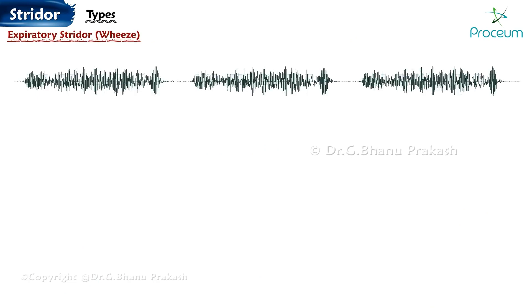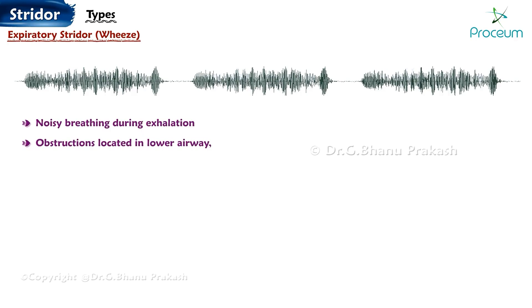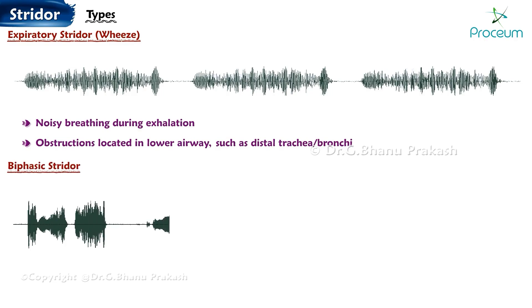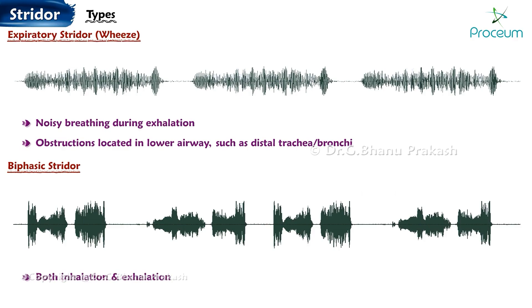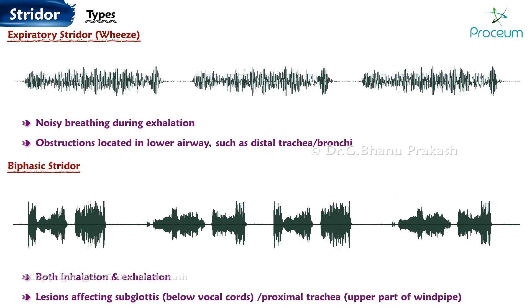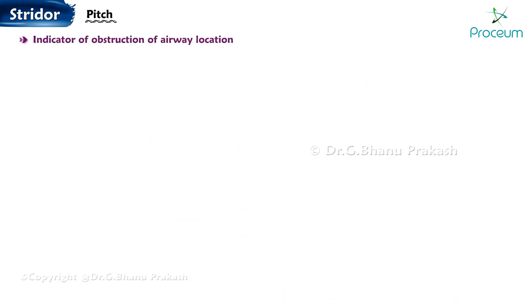Expiratory Strider, also known as wheeze, is characterized by noisy breathing during exhalation. It typically indicates obstructions located in the lower airway, such as the distal trachea or bronchi. Biphasic Strider occurs during both inhalation and exhalation. It is often associated with lesions affecting the subglottis, below the vocal cords, or the proximal trachea, the upper part of the windpipe.